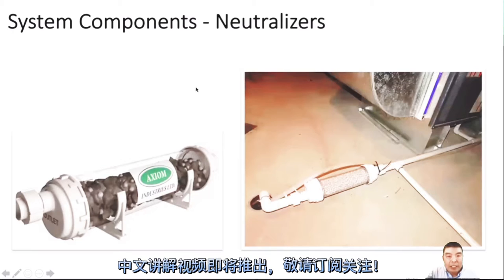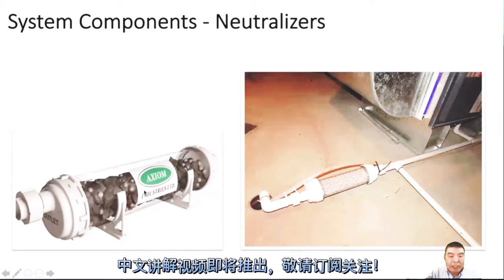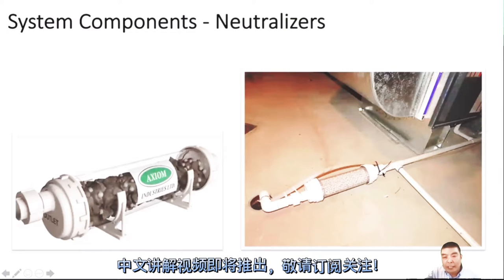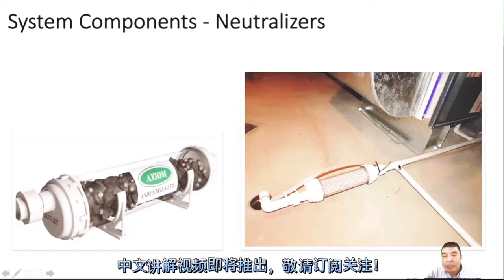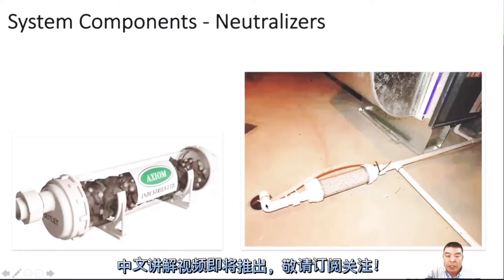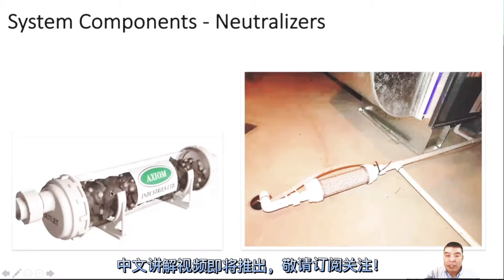This is a neutralizer. In some provinces you may never have seen this, but some provinces require it. If you don't have this neutralizer, as we talked about before, the furnace flue has acid inside — when it melts into the water, the water will be acidic too. So we don't allow the high efficiency furnace condensate water to drain directly to the sump pump — it's not allowed because it damages the pump. Some provinces require a neutralizer before the condensate drain to make the acid neutral.